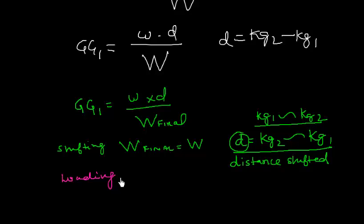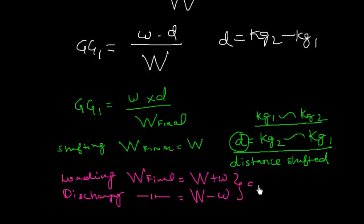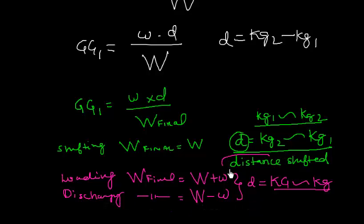Similarly, for loading, the final displacement W_final = W + w, and for discharging, W_final = W − w. In both loading and discharging cases, d is the difference between the KG of the ship and the KG of the weight, whereas in the case of shifting, d is simply the total distance shifted.